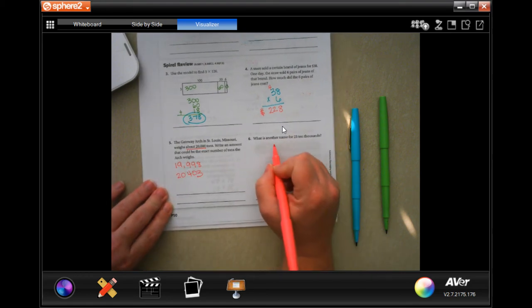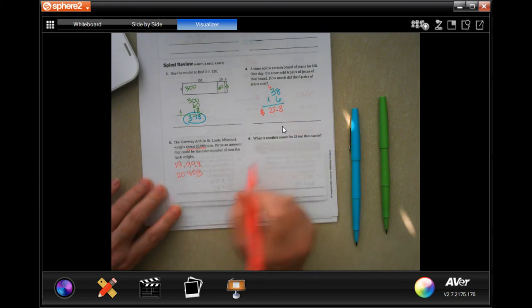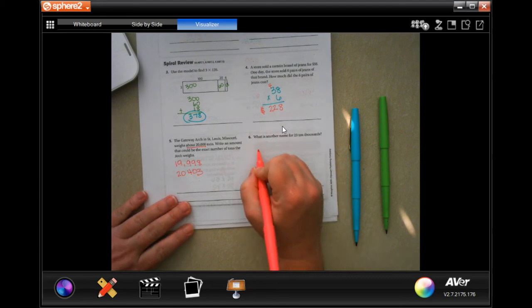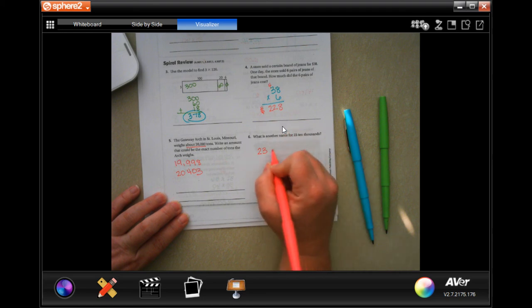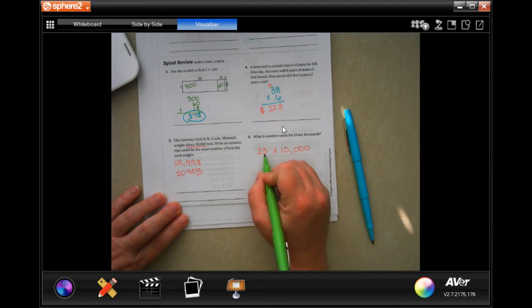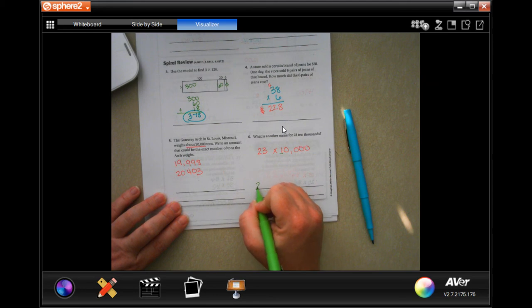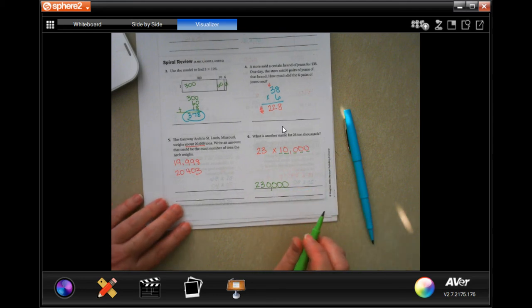What is another name for 23 ten thousands? So 23 ten thousands. Let's do it this way. So 23 times one. Then we're going to add in one, two, three, four zeros. One, two, three, four. So 230,000.